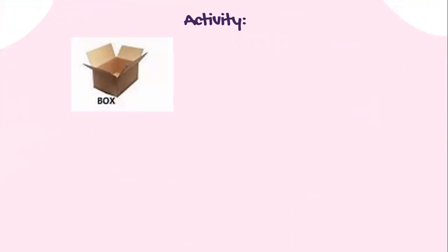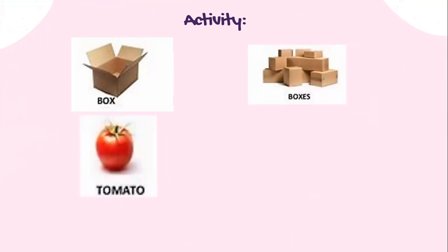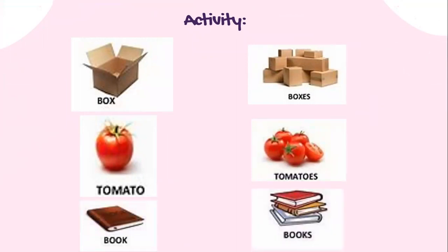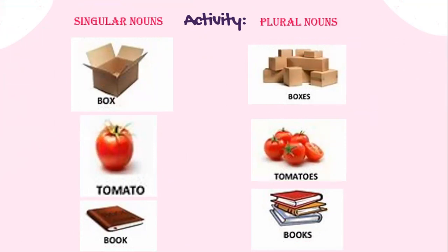Now let's look at these nouns: box, tomato, book — and their plurals: boxes, tomatoes, books. As you can see, these nouns are in the first column made into one group and in the second column they're made into another group. So what title can we give each group? Singular nouns and plural nouns.